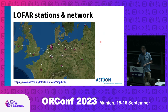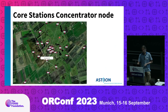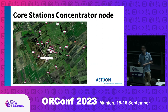Zooming in, this is showing our network across Europe. Our data center is in the northern part of the Netherlands. We partially use a private network, but mostly public networks. Zooming into the core, you can see many of our stations connecting to the main data center through a concentrator node, which has Ethernet connections to the public Ethernet.